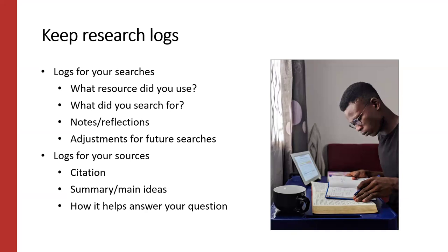And second, a research log for helpful sources that you think you're going to use. This kind of log can include the citation for the source, a summary, and notes on how the source will help you answer your research question and your main ideas. Making a log like this encourages you to review your sources in a systematic way — gathering similar information about all your different sources so you can more easily see what you have and what else you still need to find. There are a lot of templates for research logs online, or you can make your own.